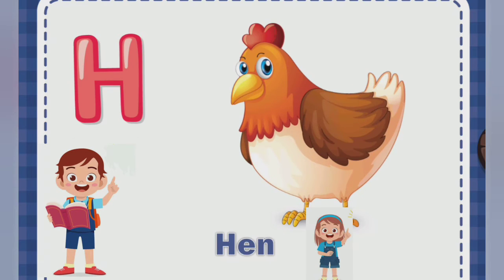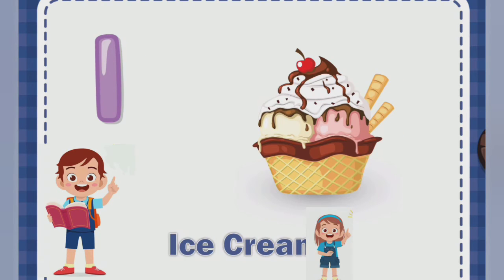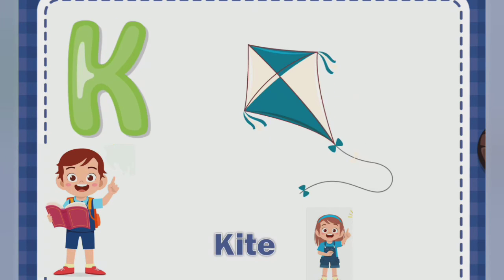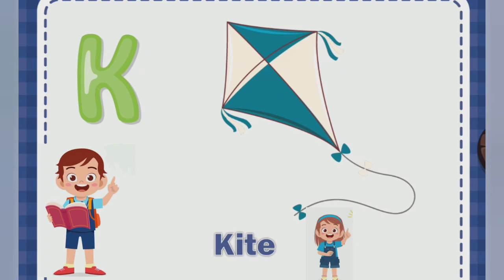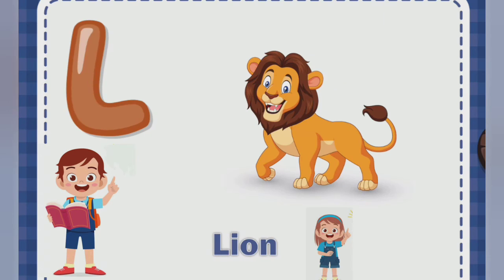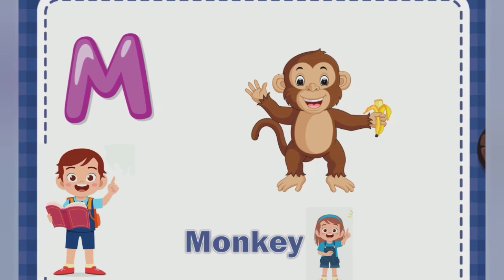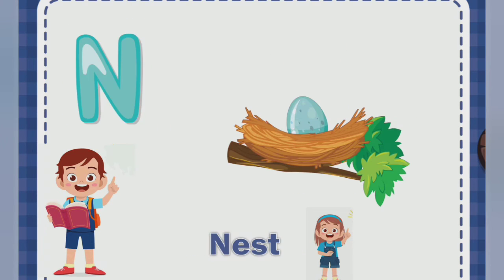...hen, I for ice cream, J for jag, K for kite, L for lion, M for monkey, N for nest.